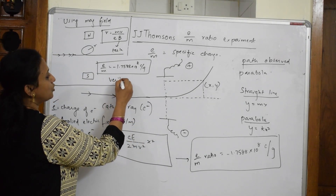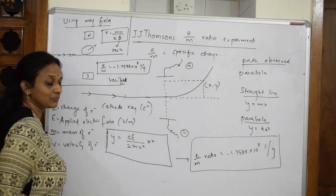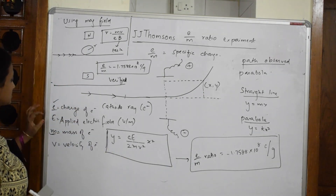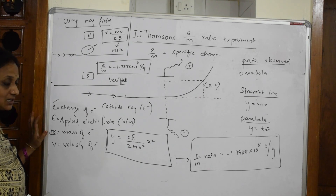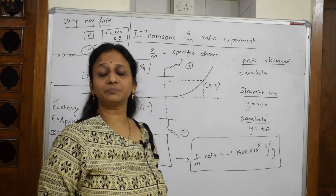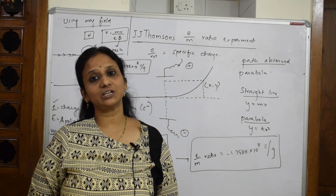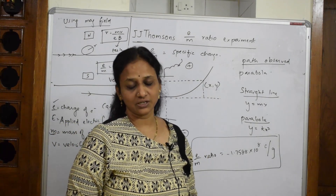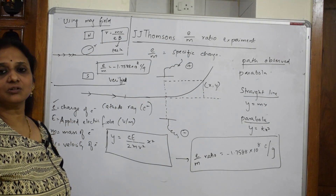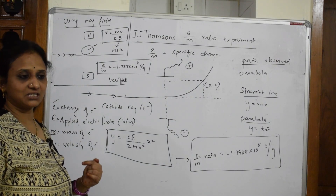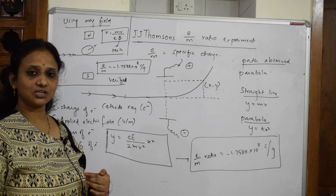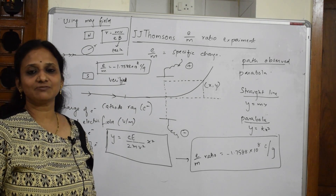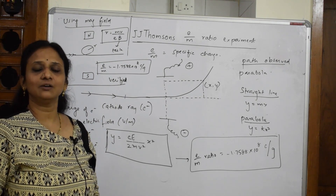Now we have two terms to find out: charge and mass. The charge of the particular cathode ray — the charge of the electron — was discovered by Millikan's oil drop experiment. Let us come back and learn Millikan's oil drop experiment. It is very interesting and easy. From there we will calculate the charge, then go to the next step which is mass, and finally divide the whole concept to get the value.